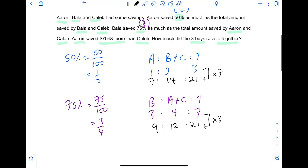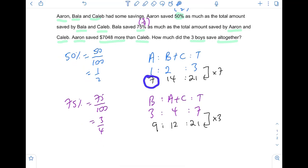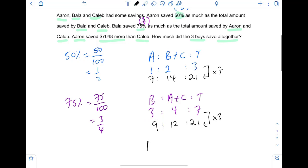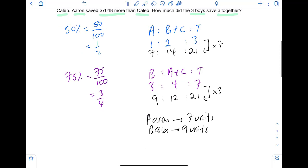Aaron 7 units. Bala, 9 units of money. How about Mr. Caleb? Mr. Caleb, you can use either this or you can even use the total to help you up.